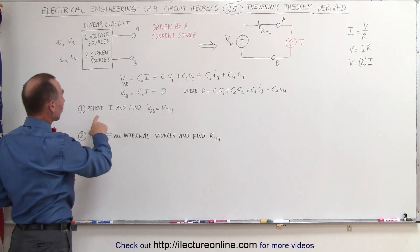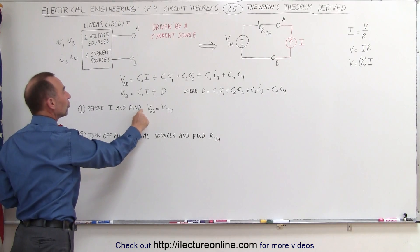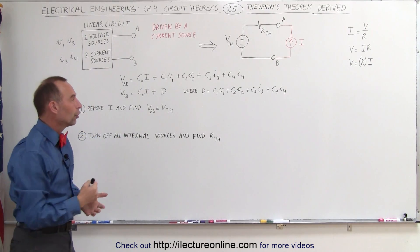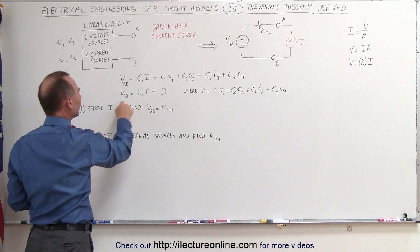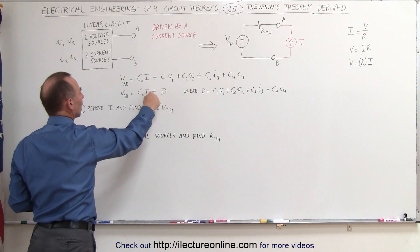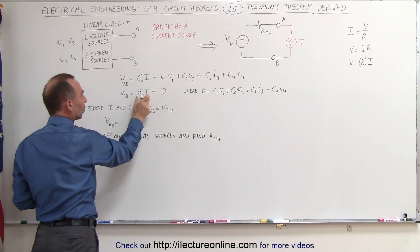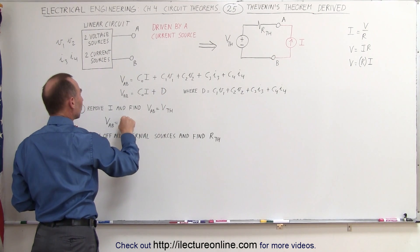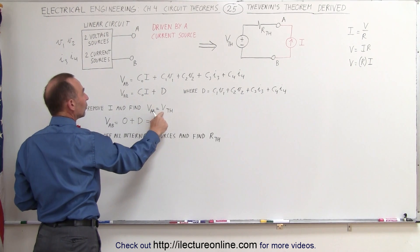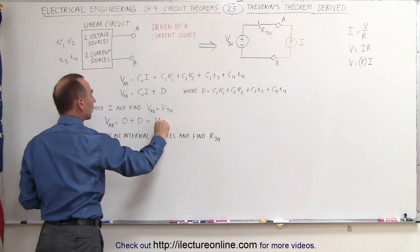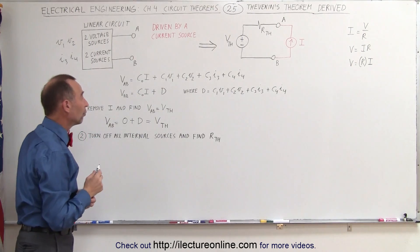Now we're going to remove the current from AB so that we have an open circuit and find the voltage across AB — that is then called the Thevenin voltage. If we remove the current source I, we don't have that contribution anymore. The voltage from A to B is then 0 plus D, because we've removed the current source, and we know that V_AB must equal the Thevenin voltage. So D in this equation represents the Thevenin voltage.